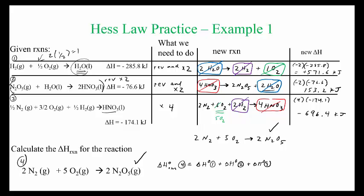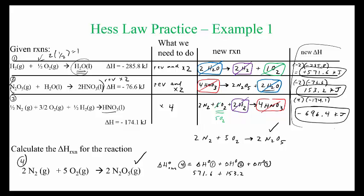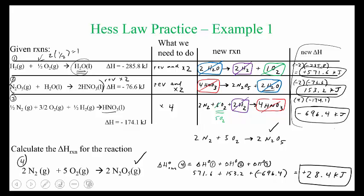The overall enthalpy is the sum of the three modified reactions: 571.6 + 153.2 + (−696.4) = +28.4 kilojoules. That's the final answer using Hess's Law.